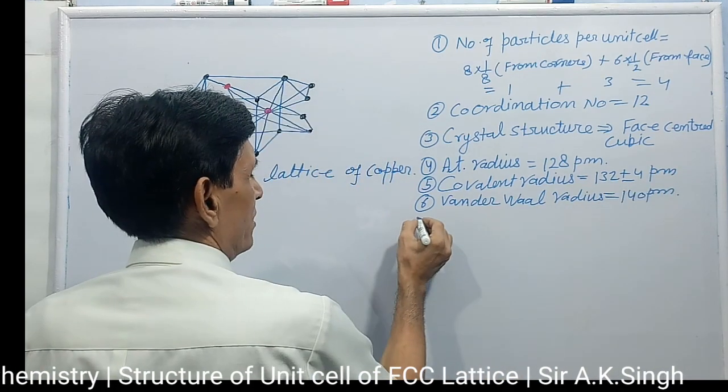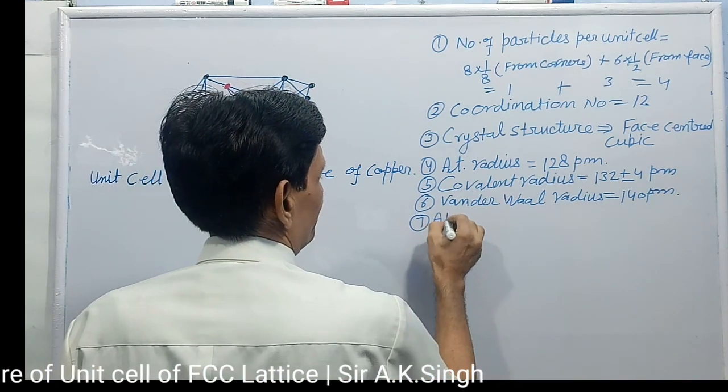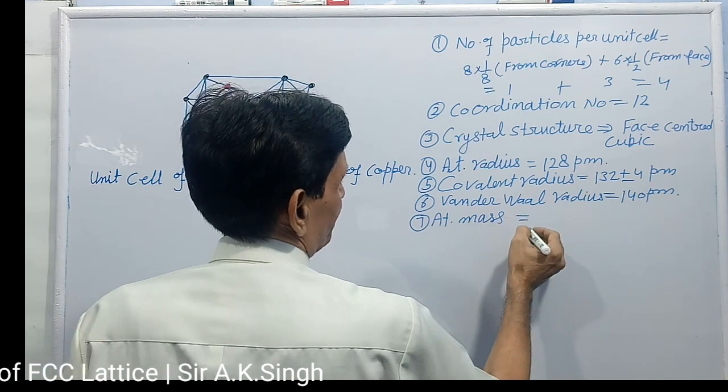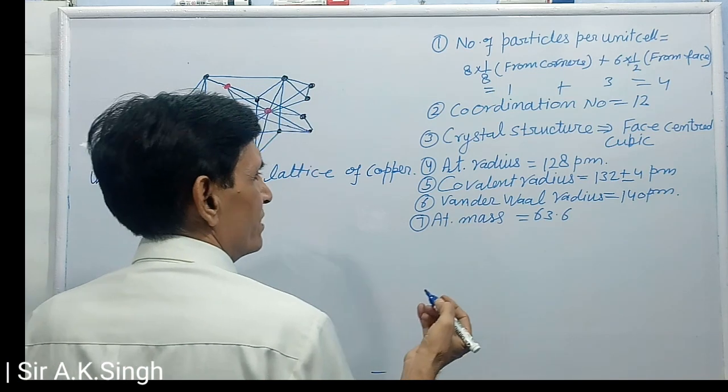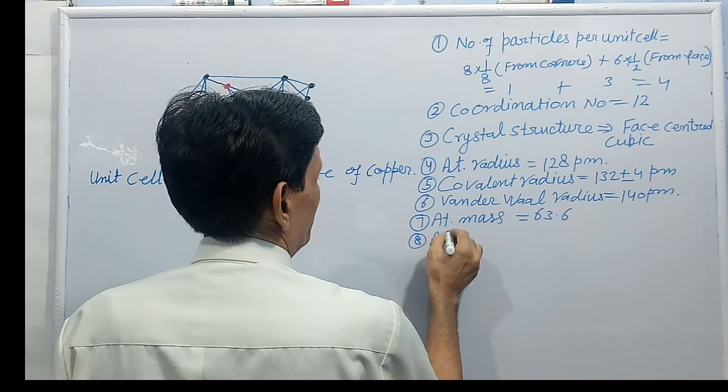Now atomic mass, atomic mass around 63.6, we use 64 mass number, and atomic number.